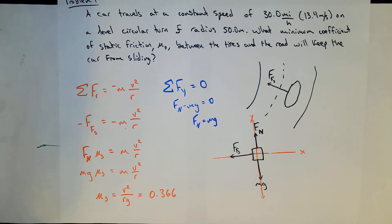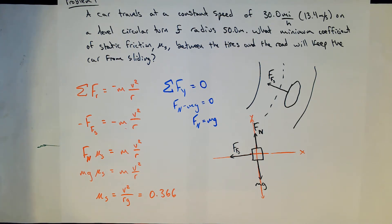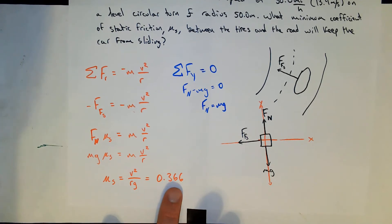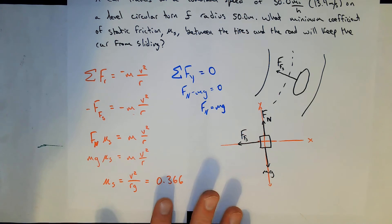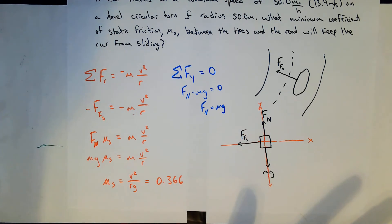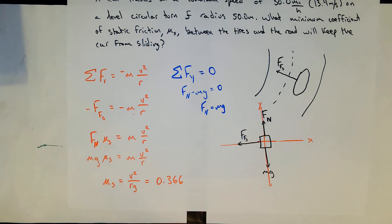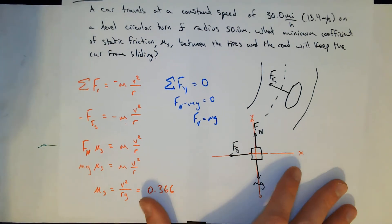The book notes that μ_s for rubber on dry concrete is close to 1, so 0.366 is well within range and the car won't slip on a regular road. However, on icy roads the coefficient drops to around 0.2 or lower, so going 30 miles per hour around a 50-meter radius turn on ice would cause the car to slide.